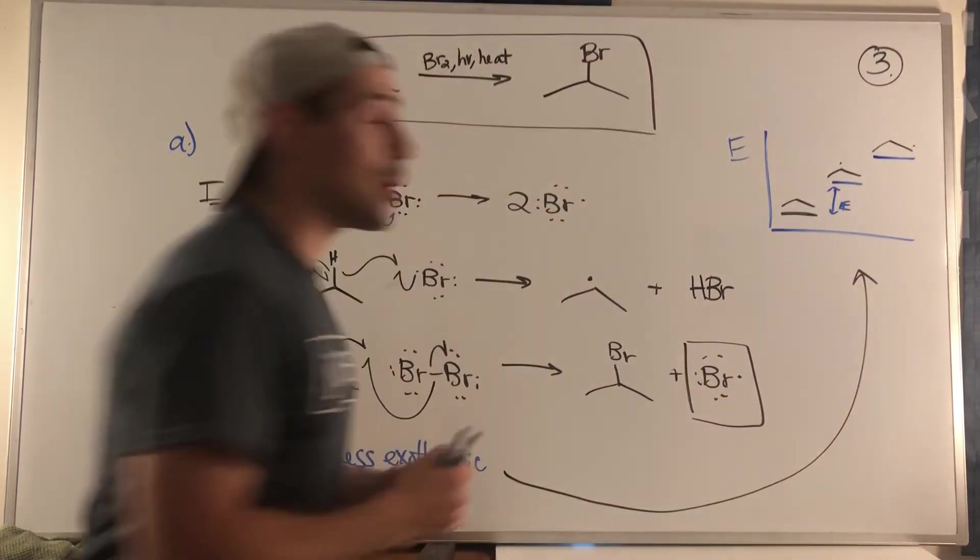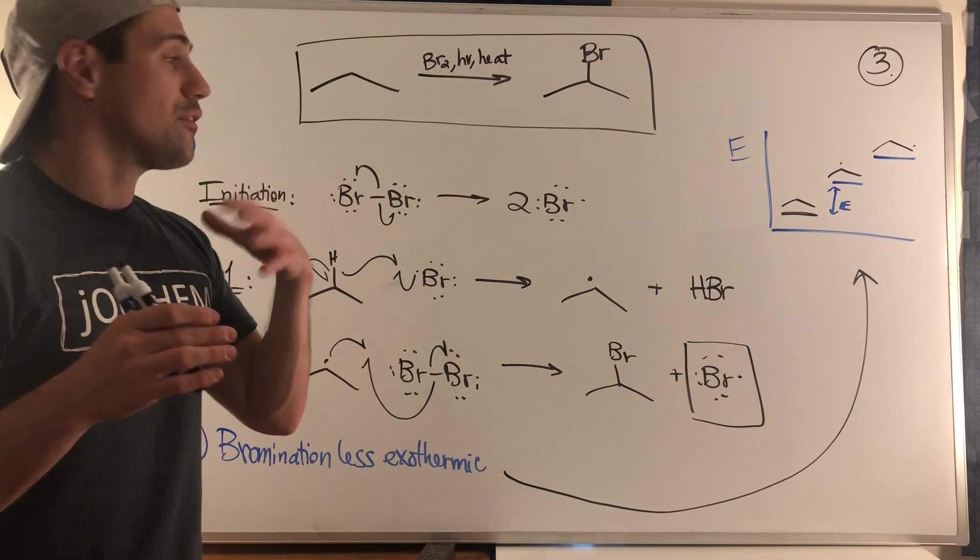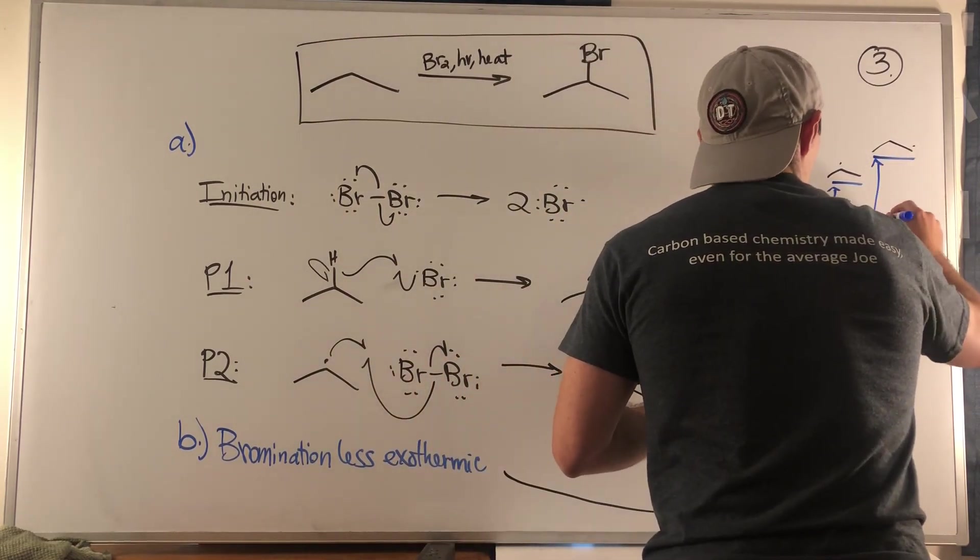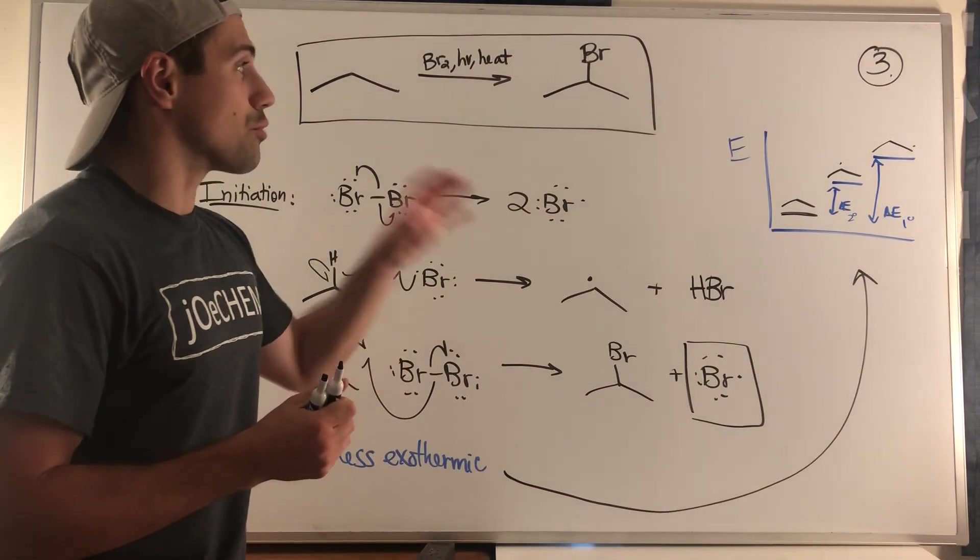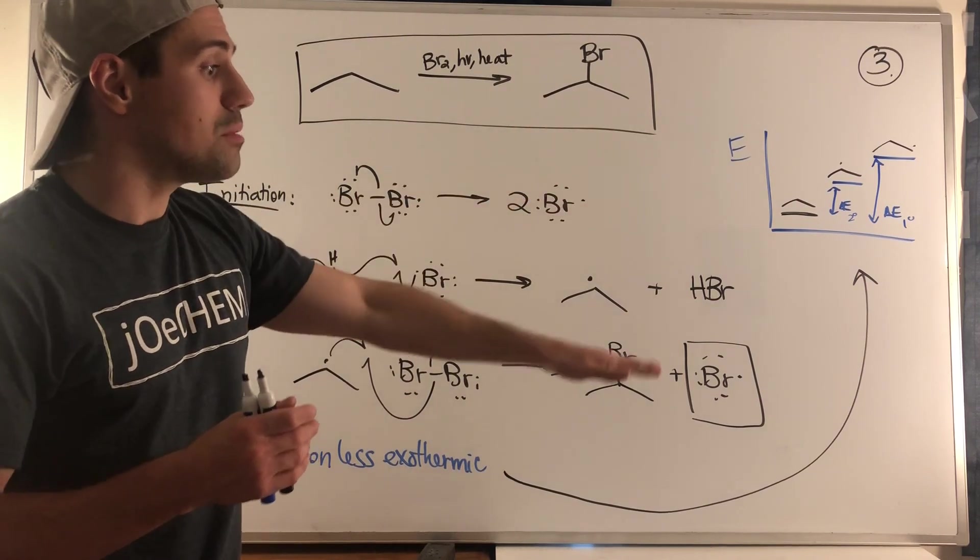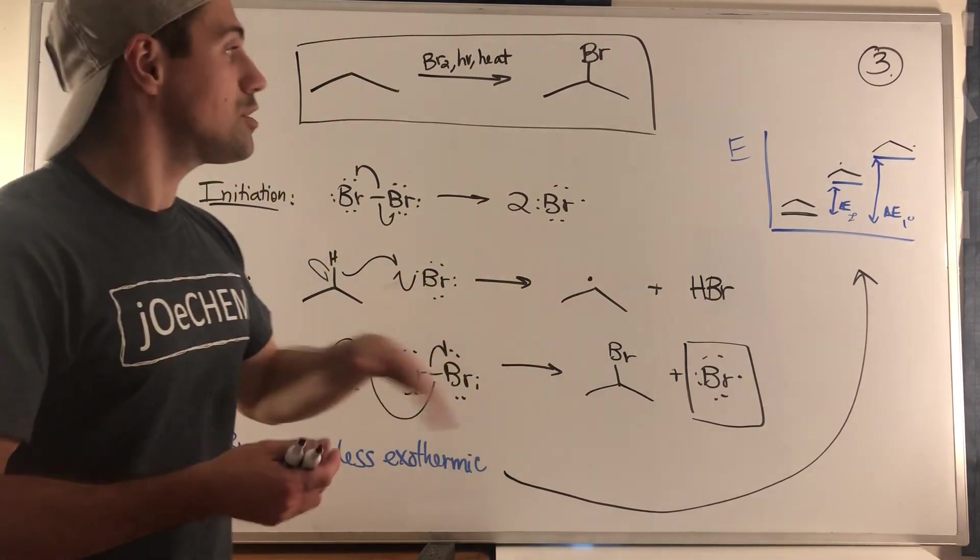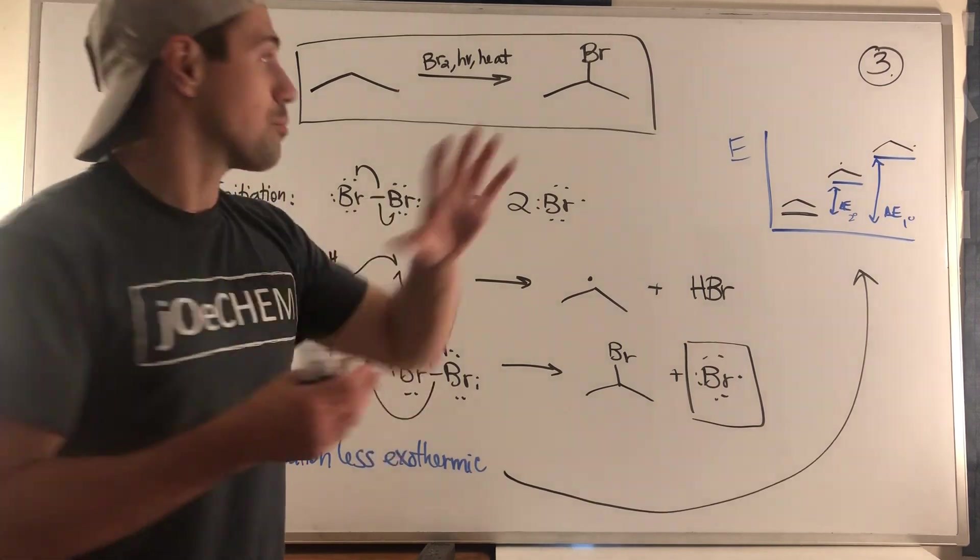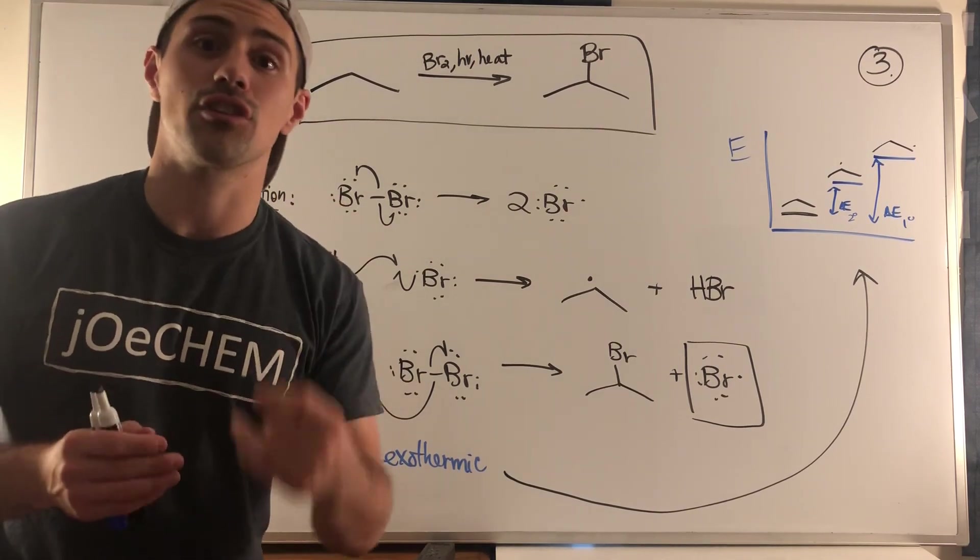Well, we know because of our knowledge of hyperconjugation, the more substituted a carbon is, the more stable it is as a radical. Radicals are unstable, but if you're more substituted, you're better off than if you're less substituted in a radical. So you can see it takes more energy to produce a, I'm going to do primary and this will be secondary. It takes more energy to break a CH bond on a primary carbon than a secondary carbon because the primary radical is going to be more unstable.